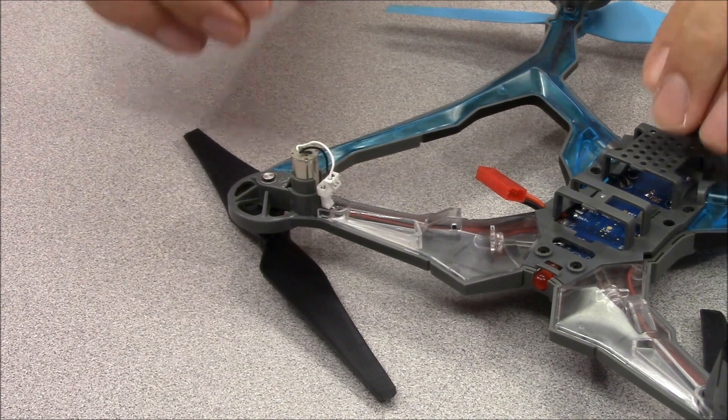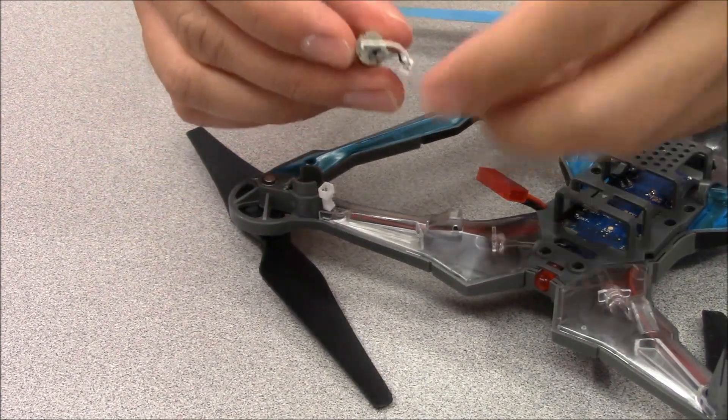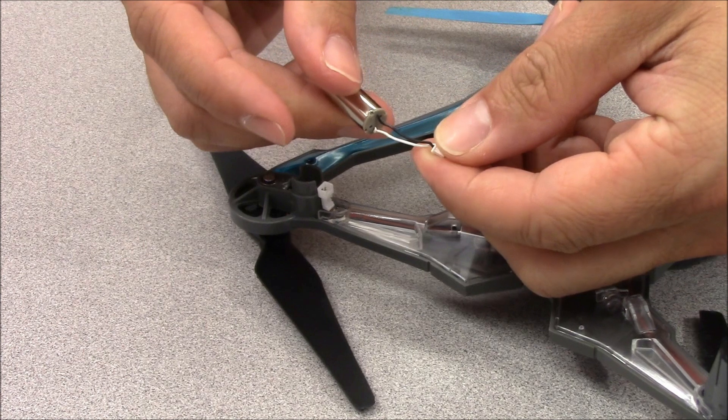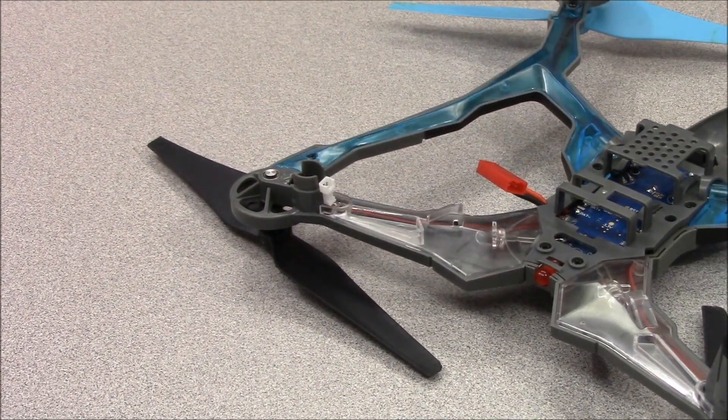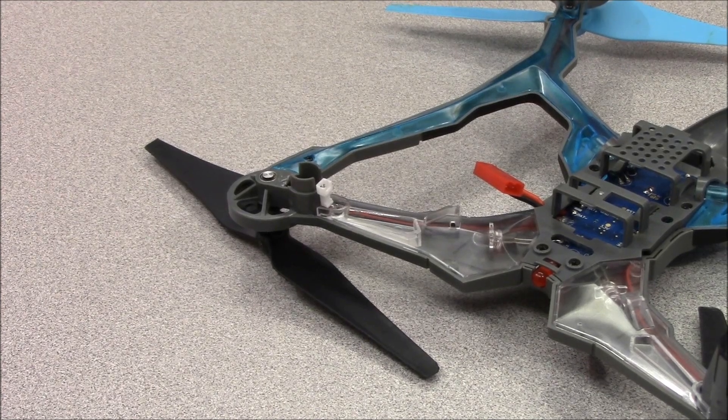Slide the motor out of the frame. Take note of the colors of the wires. The clockwise spinning motors have white and black wires and the counterclockwise have red and blue. You'll need to be sure the replacement motor you'll be installing has the same color wires.